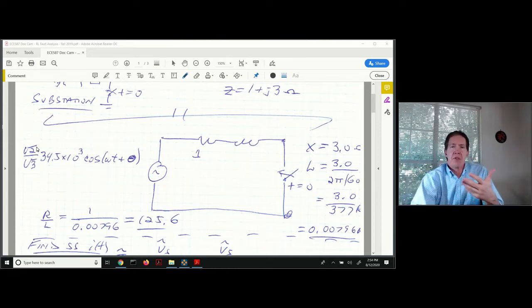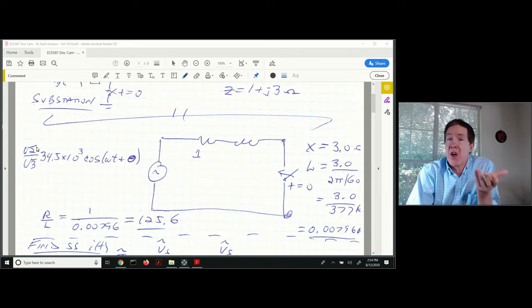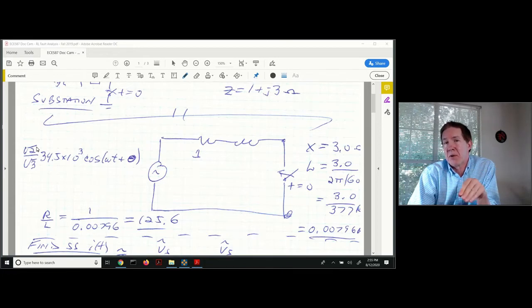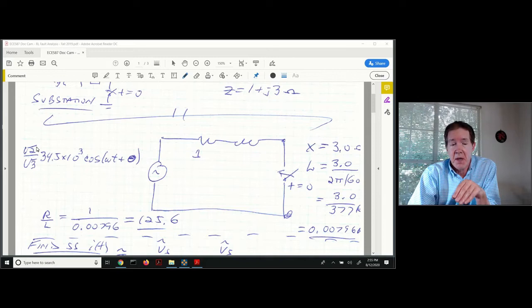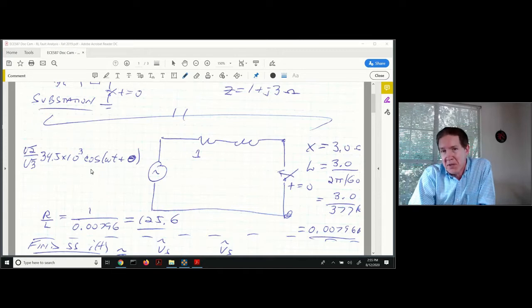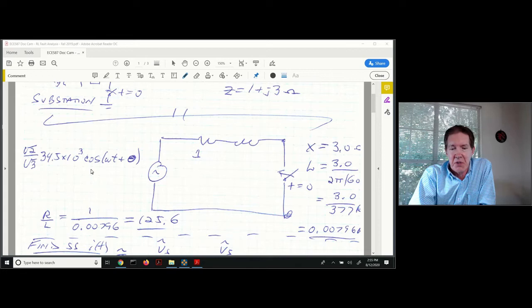When you're working these problems in real life, you have a line-to-line RMS value. You multiply by square root of 2 to get zero-to-peak and divide by square root of 3 to get a per-phase value. I'm using a cosine form here. I know in the notes I used a sine form, but I wanted to change things up so you could see the difference.